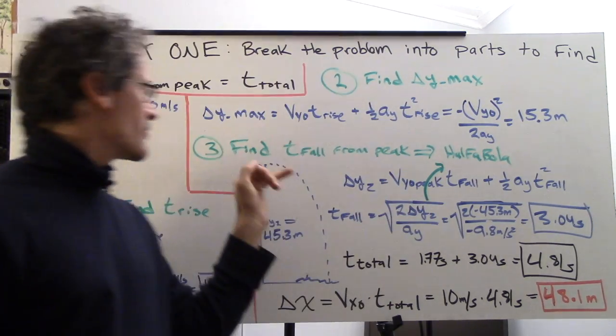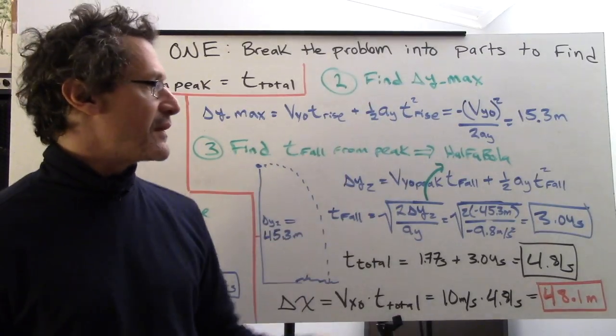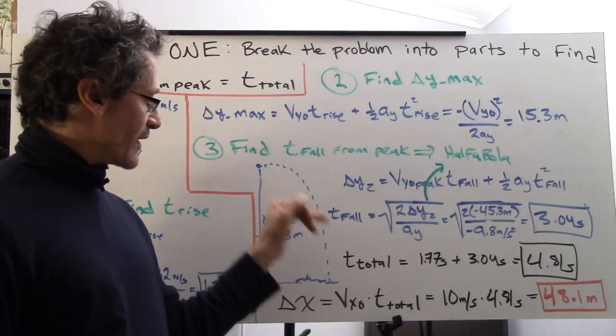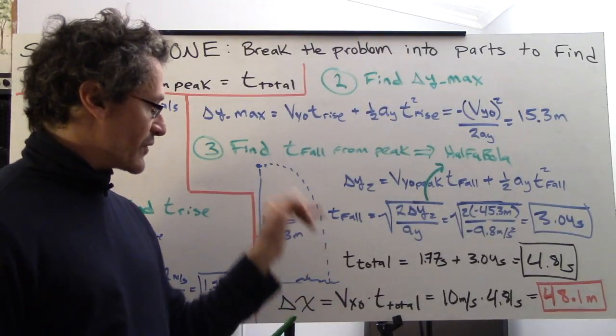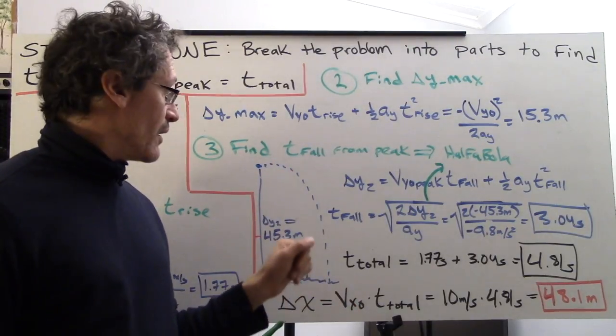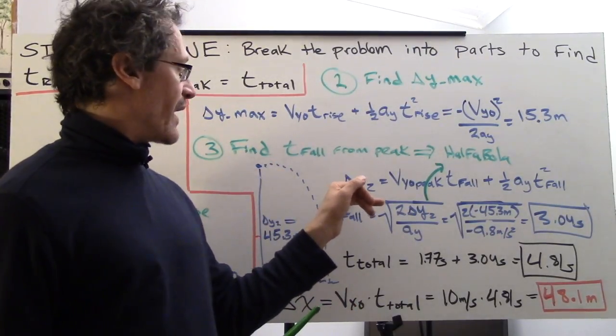Now we need to find the time of the fall. That's part three: find t fall from the peak. This is a half-parabola kind of situation. Here we are at the peak and the projectile, the croquet ball, is falling from this point at the peak to the water.